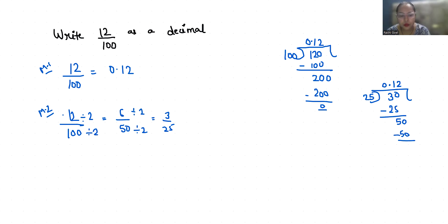So it is 0.12. Now method 3 is 12 by 100. If there are 10, 100, 1000, 10000, like zeros with one in the denominator...